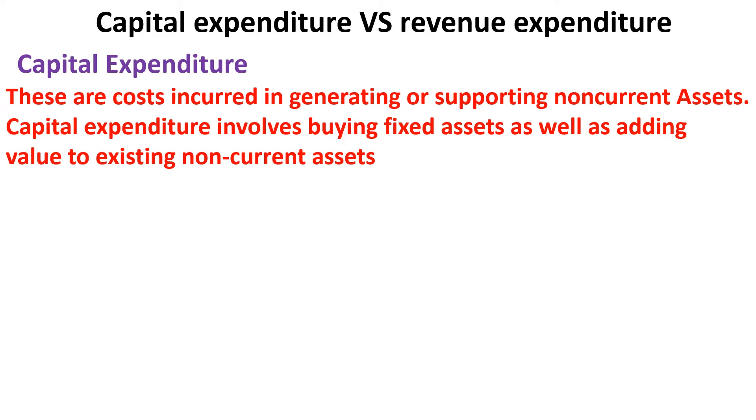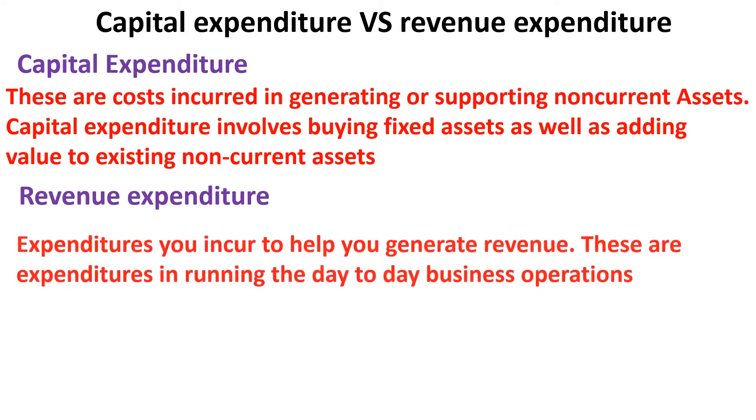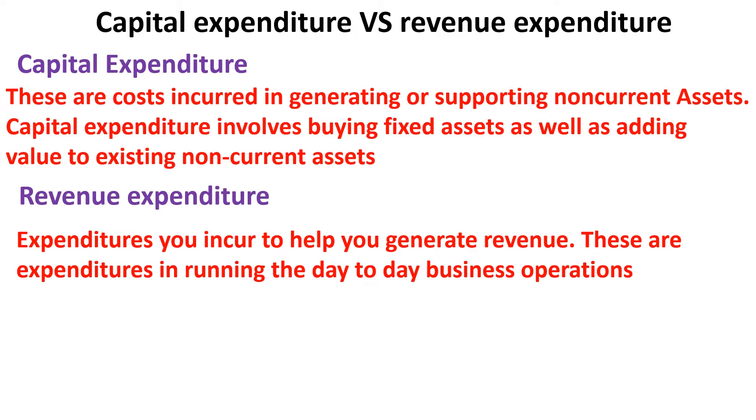Capital expenditure also includes costs incurred in adding value to an existing asset. Revenue expenditure, on the other hand, refers to expenditures incurred to help generate revenue. The simple rule is: when you spend anything on a fixed asset to get it into its working condition, that is capital expenditure. The costs you incur to ensure that fixed asset continues operating smoothly are revenue expenditures — and revenue expenditures are normally small and routine in nature.